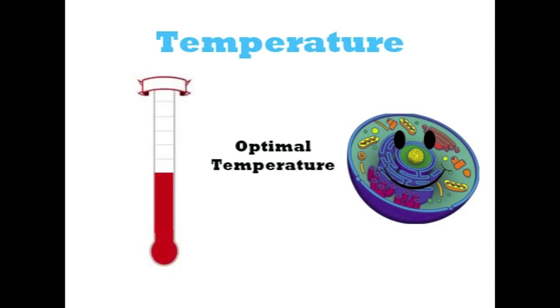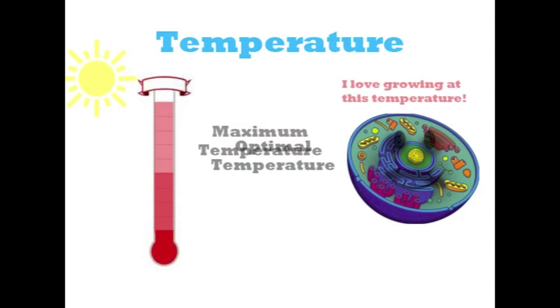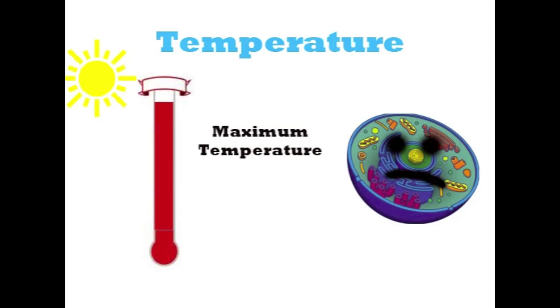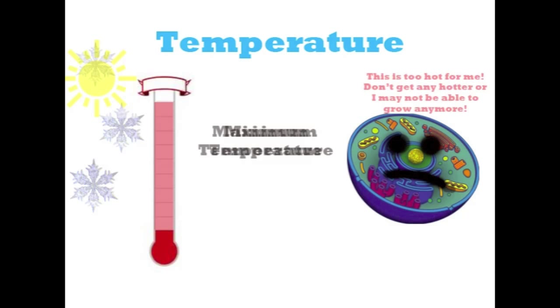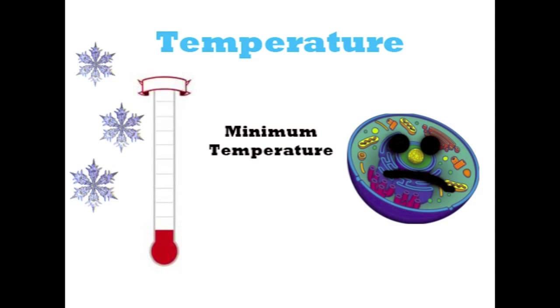At the optimal temperature, the cell loves to grow. Above the maximum temperature, it is too hot and the proteins denature. Below the minimum temperature, it is too cold for the cell to grow.